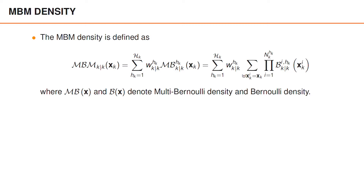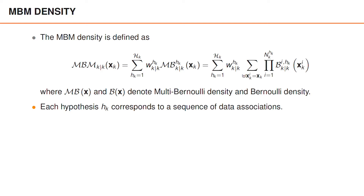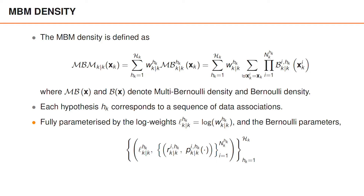In what follows, we will use calligraphic MB and calligraphic B to denote multi-Bernoulli densities and Bernoulli densities, respectively. Similarly to when we presented MHT, each hypothesis H corresponds to a sequence of data associations. Calligraphic H denotes the number of hypotheses and the weight W is the probability of the hypothesis. In MOT, the multi-Bernoulli mixture density is parametrized by the log weights L and the Bernoulli parameters for each multi-Bernoulli, which are, for each Bernoulli, the probability of existence R and the Bernoulli state density P. We use log weights instead of weights for numerical reasons.